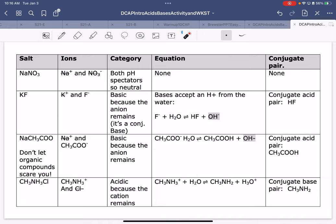Here's some examples. I have NaNO3. If you look on the list, they're both knocked out. So, they're both spectators. So, it's going to be neutral. There's no equation. There's no conjugate pair.